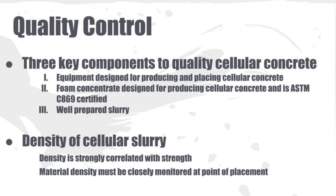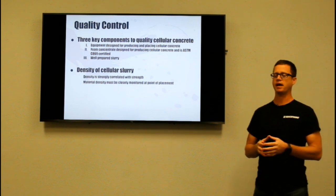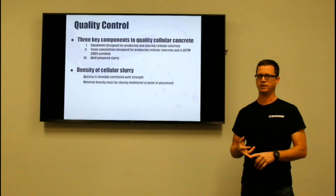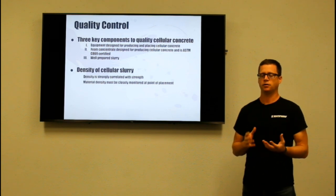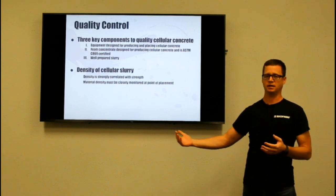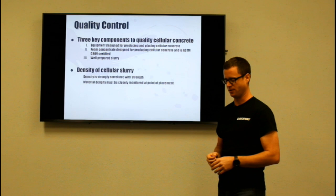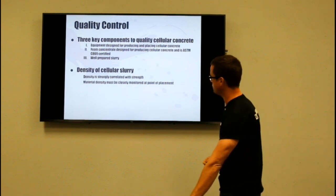Density of cellular concrete is extremely important for ensuring good quality material, because density is strongly correlated with strength. Checking your density is the be-all end-all of QC with cellular concrete. We tell people you want to measure that density as close to the point of placement as possible, because if you have any variations due to pump style, pump condition, or other factors, you'll have had a chance for all of those things to affect the material. Checking it closest to the point of placement is the best way to ensure you've accounted for any issues.